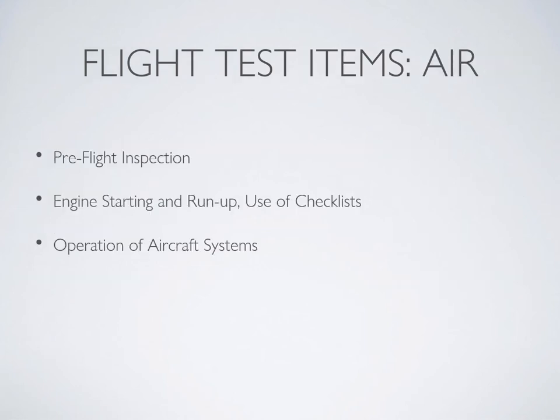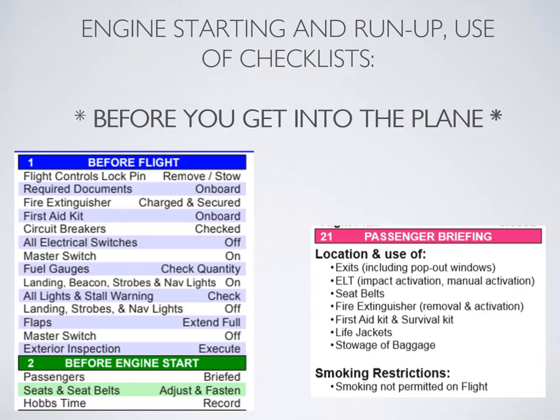The pre-flight inspection, engine start, run-up, and use of checklists verifies that you know how to use a checklist — so read it slowly and meticulously to ensure you do not miss any items. The pre-flight inspection should be done first as a flow, then go back and verify everything with the checklist. Before getting into the airplane, make sure you cover all items, especially the passenger brief, which might be easy to miss since you usually don't brief your instructor before a flight.